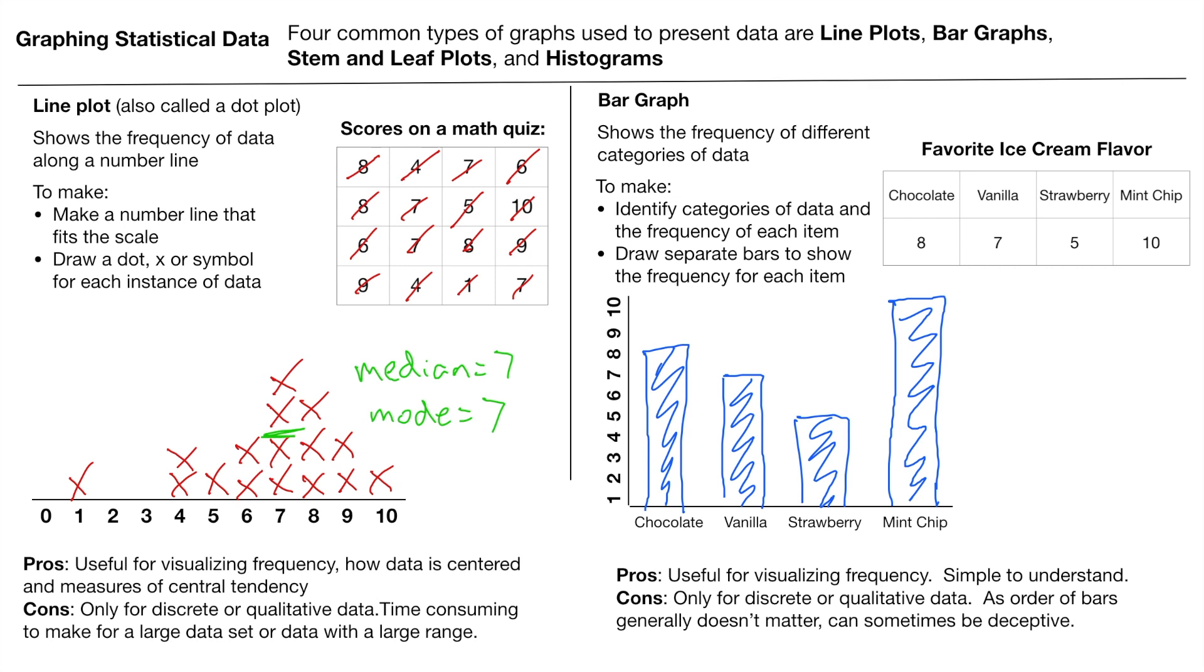Over here for some pros and cons for bar graphs, useful for visualizing the frequency. It's simple, easy to understand, most common graph you're ever going to see. And it's only for really discrete or qualitative data. One last thing you can sometimes, because people can move the bars around, sometimes it can be used to be a little deceptive. It's not actually changing the data, but it can kind of try to make it look a certain way.